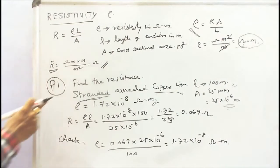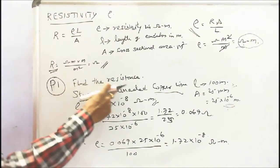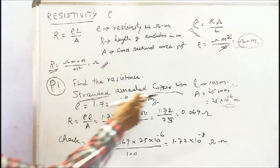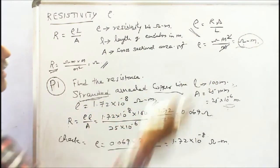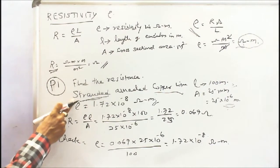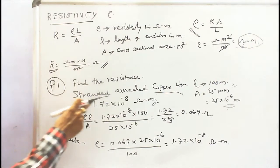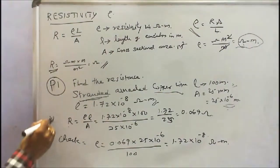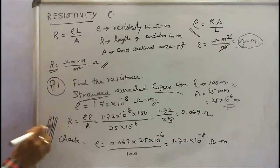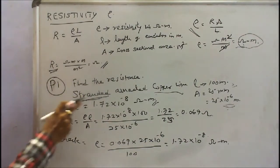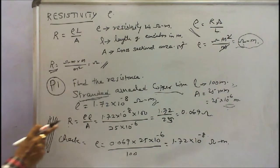Problem 1: find the resistance of a standard annealed copper wire. Length is 100 meters. What is meant by 'standard'? Standard means these are all small wires connected together — this is called stranded. Standard aluminium, standard copper — this is the meaning of standard.